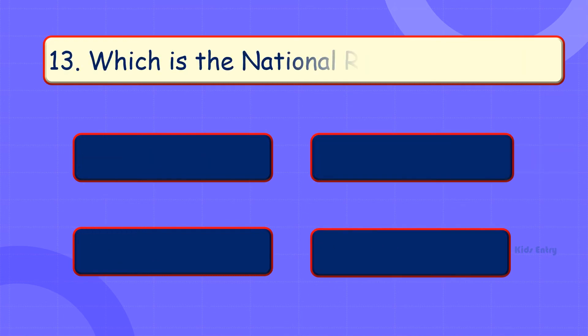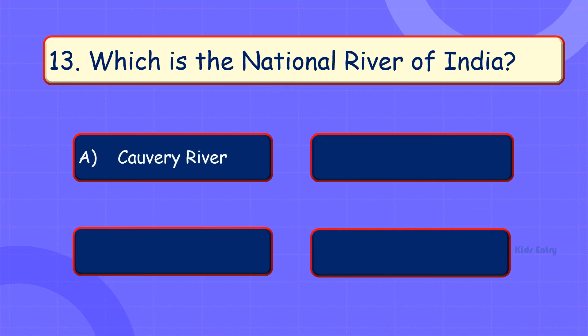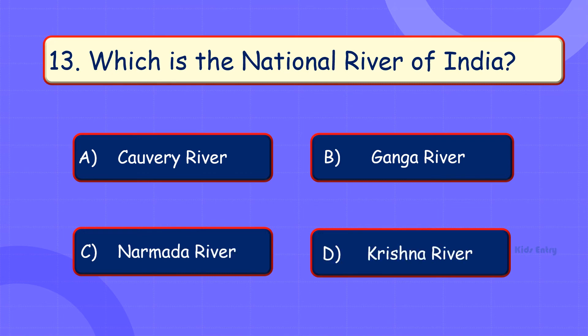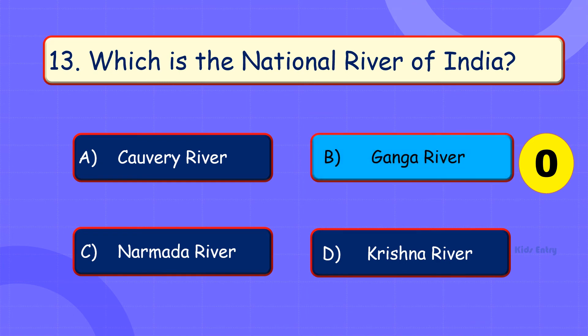Which is the national river of India? A. Kaveri river. B. Ganga river. C. Narmada river. D. Krishna river. Answer is Option B: Ganga river.